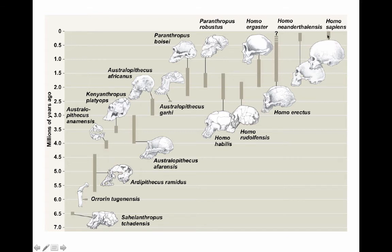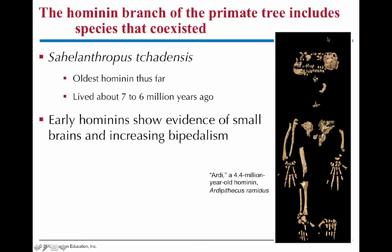Homo sapiens has only been around for something like 200,000 years, whereas Homo erectus was around for millions of years. An important fossil is Ardipithecus ramidus — called 'Ardi' — who was bipedal but still had a small brain and still lived in the forest. This changed our hypothesis: for a while it was thought the big brain came first, then upright walking, but fossils show they were walking upright long before the brain expanded.